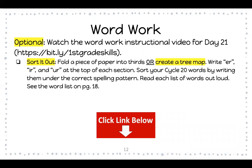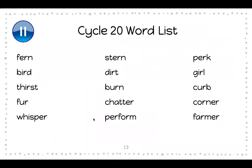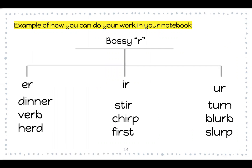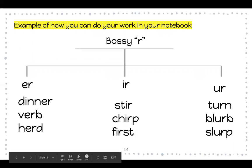For word work, you're going to watch the word work instructional video for day 24. You're going to sort it out — fold a piece of paper into thirds or create a tree map. Write ER, IR, and UR at the top of each section. Sort your cycle 20 words by writing them under the correct spelling pattern, then read each list of words out loud. See the word list below on page 18. I made a mistake — it should say day 24 and I apologize. Here are your cycle 20 words, so you can pause on the screen to copy them down. An example of how you can do your work: I have created a tree map labeled ER, IR, and UR — you will put your ER words, IR words, and UR words in the correct sections. These are not your words; this is just an example, so please do not copy down these words.